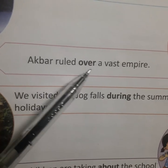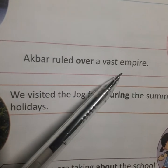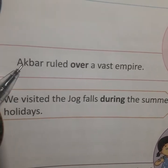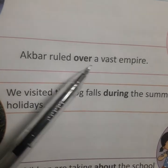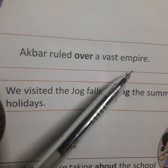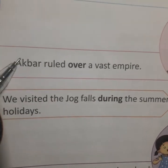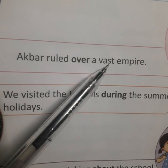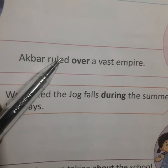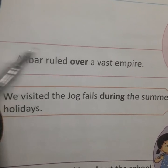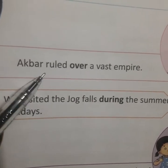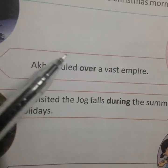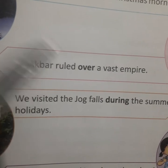Akbar ruled over a vast empire. So, Akbar is the noun, okay? 'Over a vast empire' — अकबर ने एक बहुत बड़े empire पे rule किया. तो ये इसका इससे relationship बताता है. So, 'over' is here a preposition.